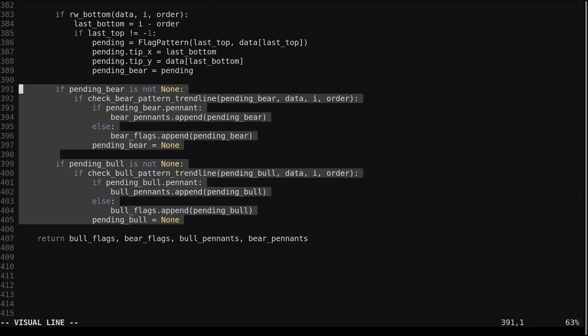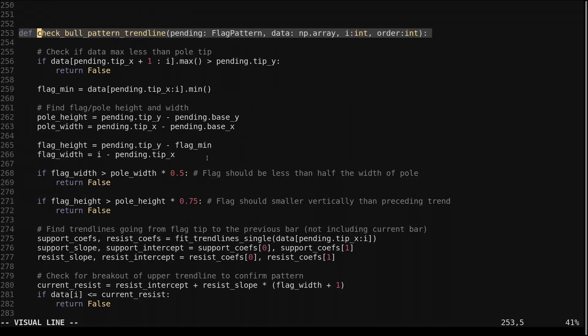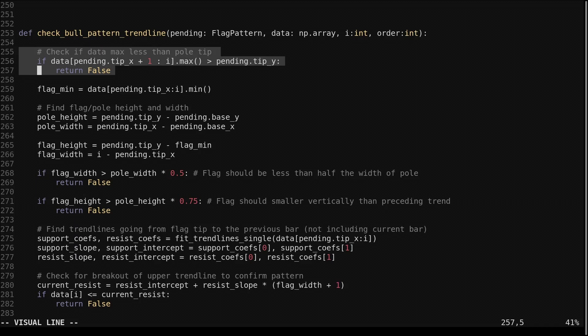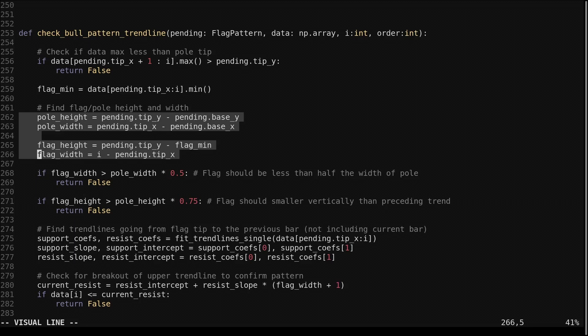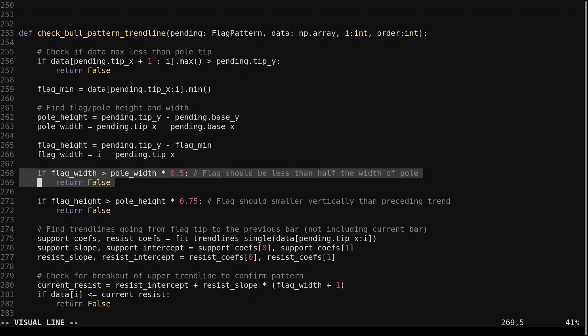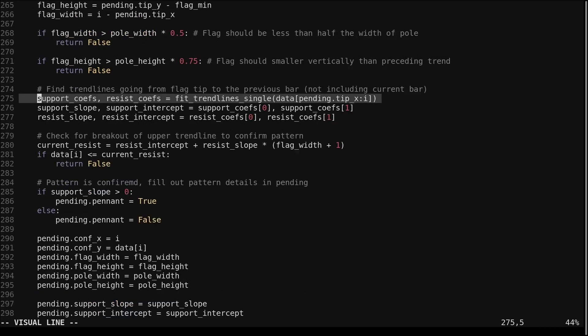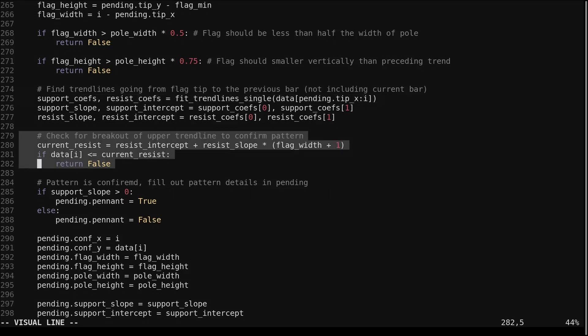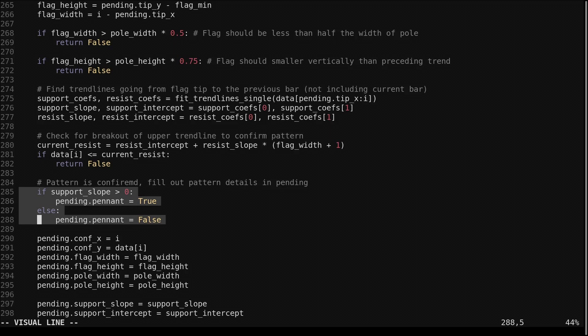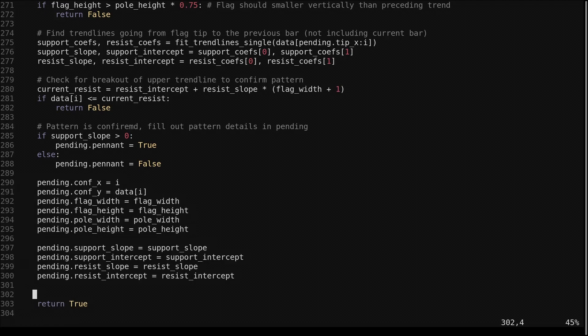The pending patterns are checked for confirmation with the check bull pattern trendline and check bear pattern trendline functions. Let's look at the bull pattern trendline function. We first ensure that the tip is the maximum price found up to but not including the current price. We calculate the pole and flag dimensions. We verify the flag width is less than half the width of the pole. Then we verify the flag height is less than 75% of the pole height. In the last version I used 50%, I changed it to 75% to be more lenient and thus find more patterns. We use the fit trendline single function from the trendlines video to find the trendlines from the tip to the candle prior to the current, not including the current price. We check that the price has broken out of the upper trendline confirming the pattern. We set it as a pennant if the lower flag line slope is positive, then fill out the details about the flag and return true.